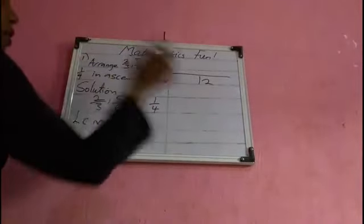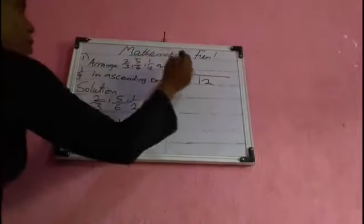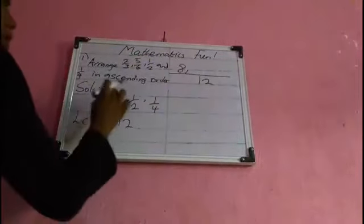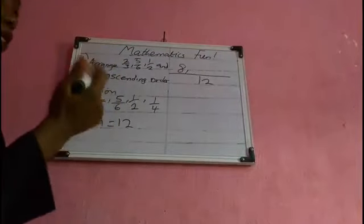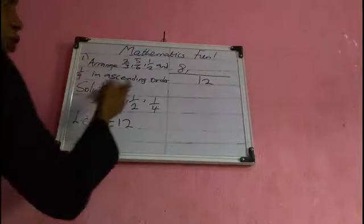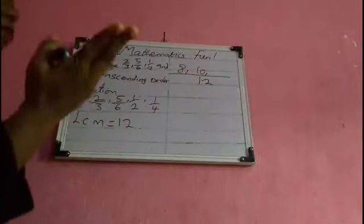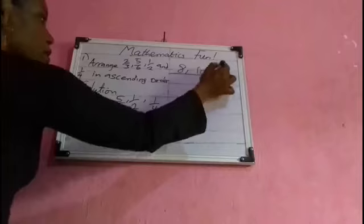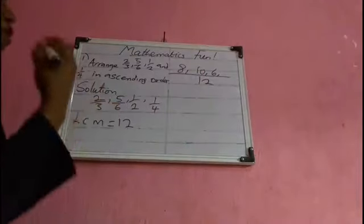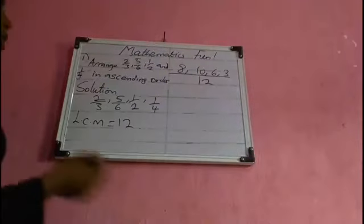So the LCM is 12. In 12, three goes four times — four times two gives us eight. Six goes into 12 two times — two times five gives us ten. Two goes into 12 six times — six times one gives us six. Four goes into 12 three times — three times one gives us three.